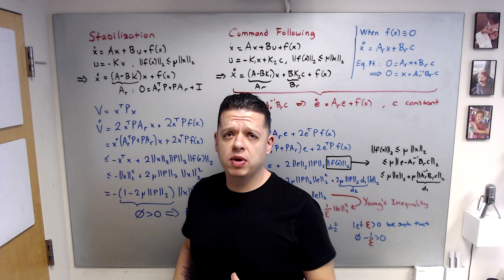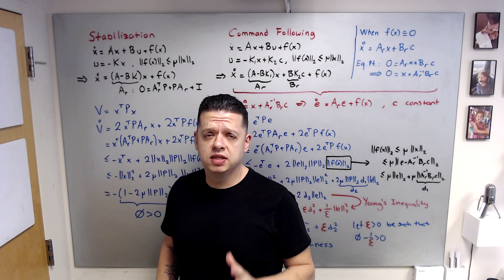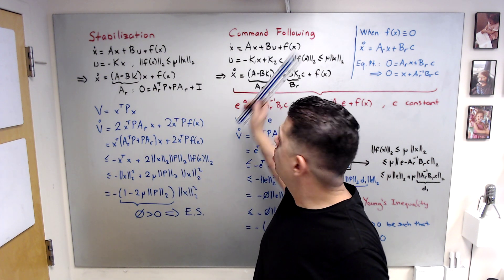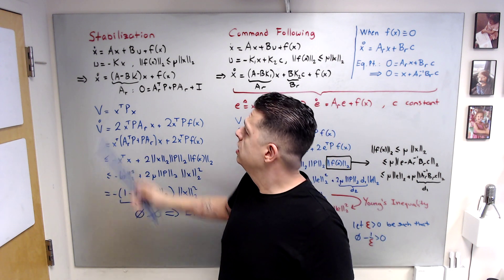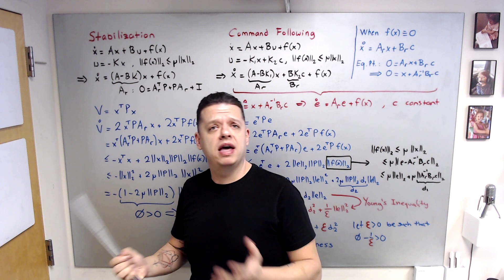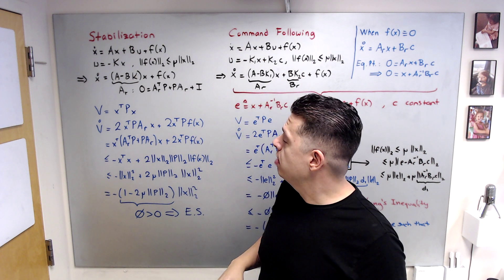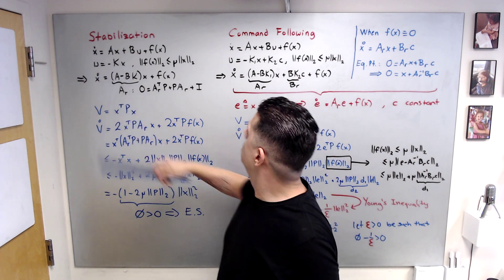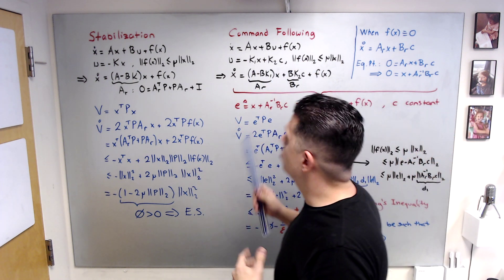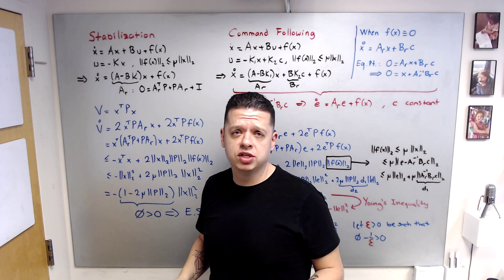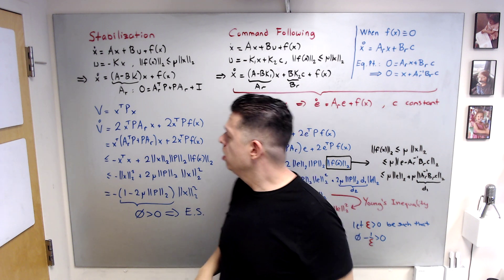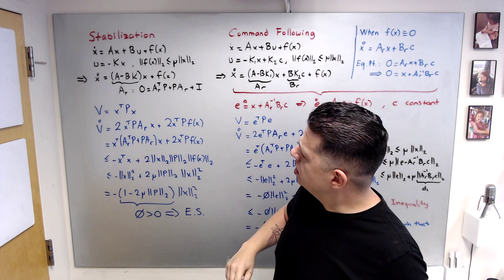This video is about uncertainties and how uncertainties affect stabilization and command following when you use fixed-gain controllers. The control parameters — K in the stabilization form, or K1 and K2 in the command following form — do not change; they don't depend on state or time.